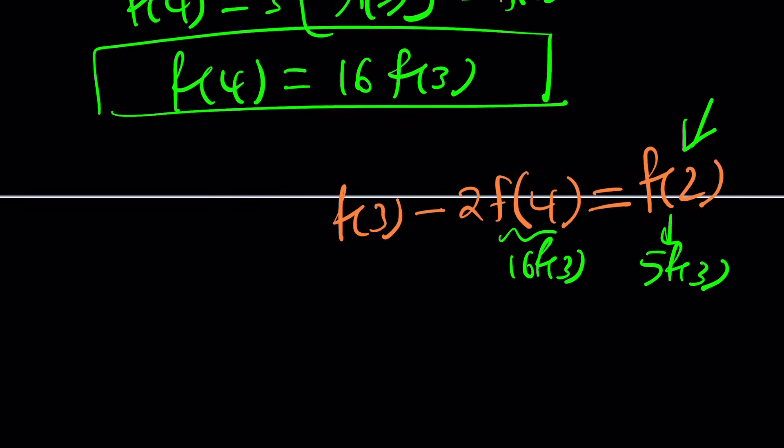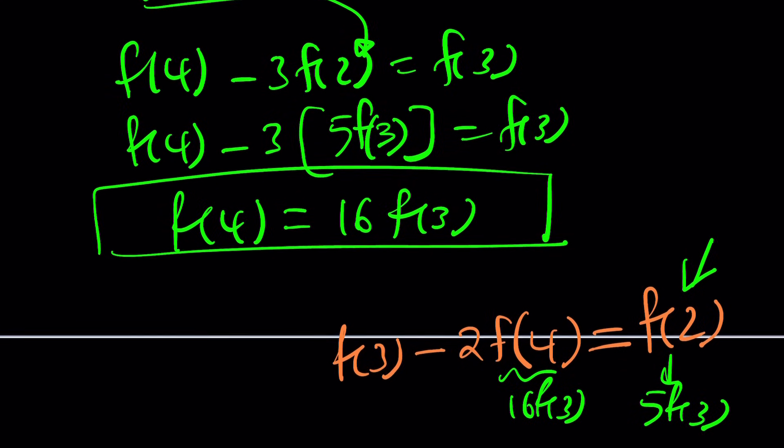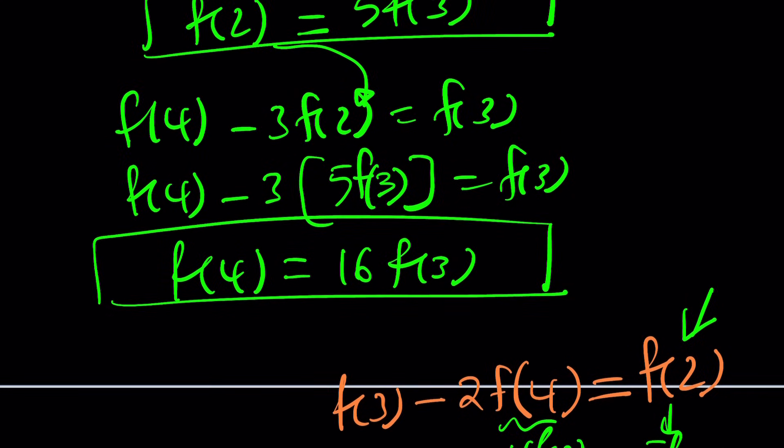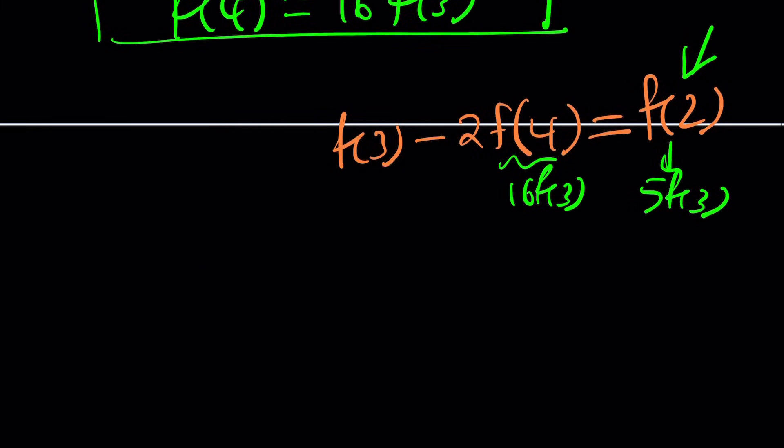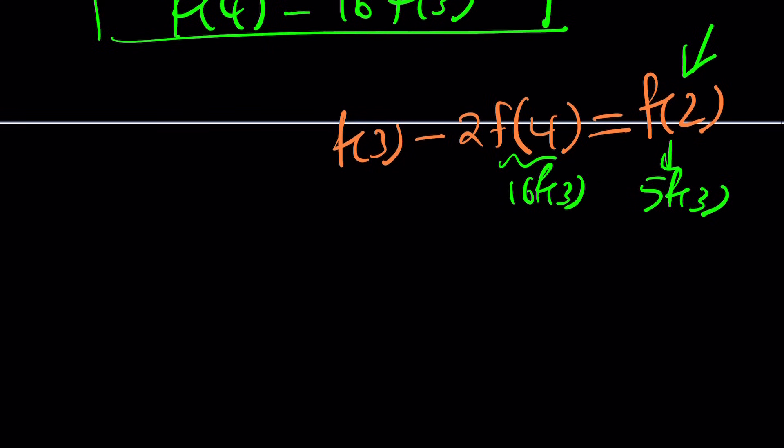f(3) equals f(3). Now from here, we get minus 15 plus 1, we get f(4) equals 16f(3). Awesome. Looks like we were able to write everything in terms of f(3), which is something we should be able to use in the third equation. So now we can replace f(2) with 5f(3) and replace f(4) with 16f(3), and we'll find f(3) from here. From here, we get f(3) minus 2 times 16, 32f(3), which is negative 31f(3) equals 5f(3). That's kind of interesting.